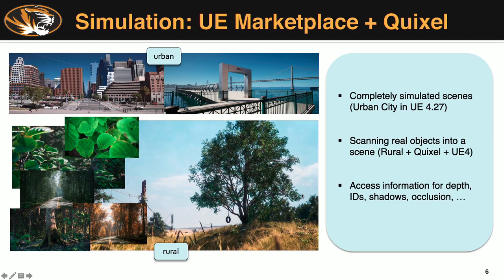Some important information about the simulated data: in UE5, you can create simulated scenes and completely render them in the machine, or scan objects in. All of that information is freely accessible, so there is a degree of reproducibility. We can access information about every scene we make, including depth, IDs, shadows, and occlusion — we have a huge amount of information at our disposal for creating simulated data, something we definitely don't have for real data.